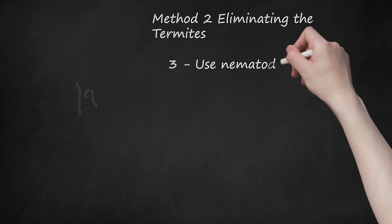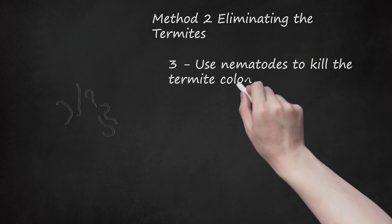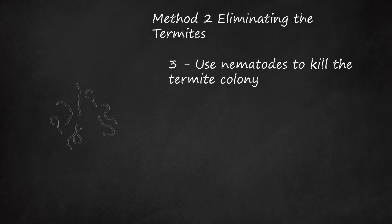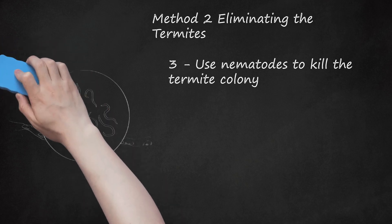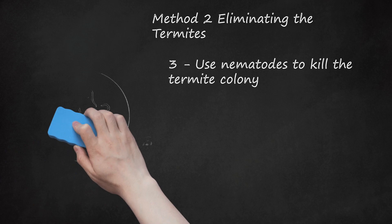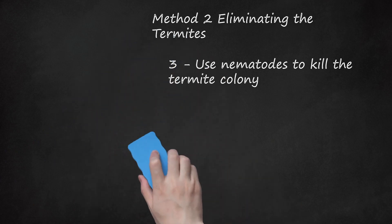Step 3: Use nematodes to kill the termite colony. Nematodes are roundworms that can kill termites. Expose the termite colonies to nematodes by releasing them in areas where there is high termite activity. This is not always the most effective method of extermination. Nematodes have varying mortality rates depending on their environment. The Steinernema carpocapsae is one of the most effective types of nematode to eradicate termites and other wood borers.